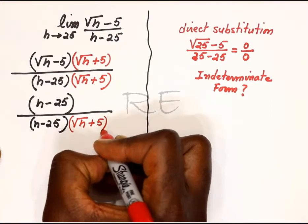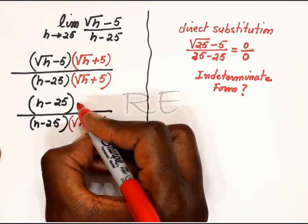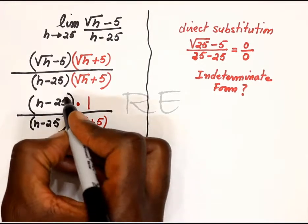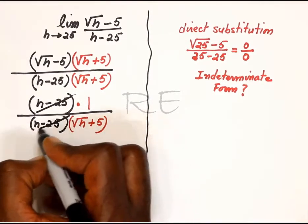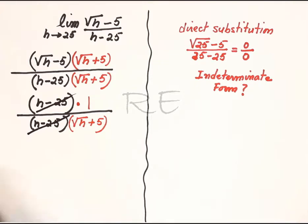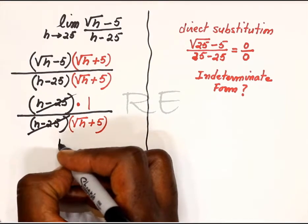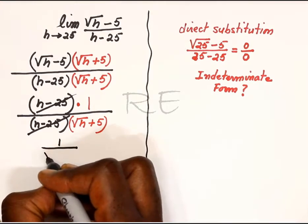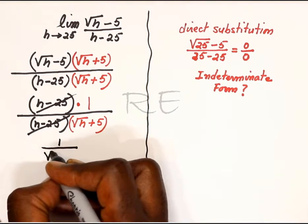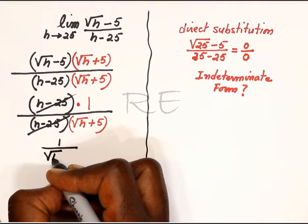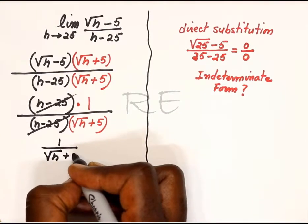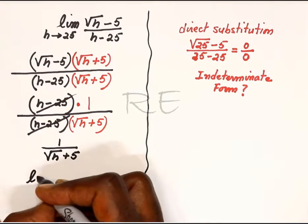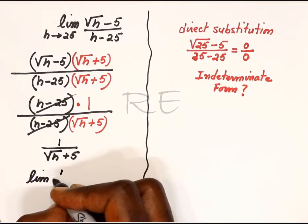Let's just multiply the numerator by 1 and we leave the denominator as it is. So h minus 25 cancel. So a simpler expression of our function is 1 over square root of h plus 5.